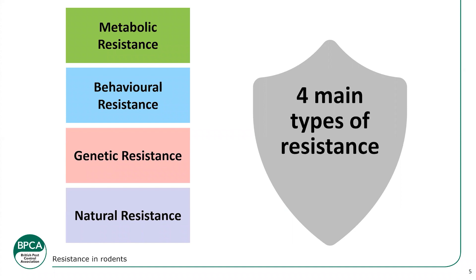Then we have the two main ones we come across: behavioral resistance and genetic or physiological resistance. Behavioral resistance is where rodents in a population have built up an avoidance to bait or materials — they'll actually avoid bait boxes, traps, trays, and things like that. I have a few studies that highlight how this has been picked up and what to look out for. We'll also talk about genetic resistance.